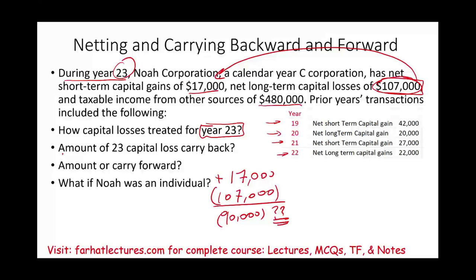We answer the first question: what can we do with the excess losses for 2023? Nothing for 2023 — not applicable. But we can carry back this amount. We're going to take this $90,000 of losses and carry it back three years, starting with the earliest year, 2020. In the year 2020, we have $20,000 of capital gains, and we can wipe this out.